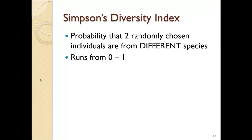But if you have low diversity, the probability that two randomly chosen individuals are from different species is going to be much lower. The chances are, if you grab two individuals at random, they'll be in the same species if you have low diversity. This means that Simpson's does what we want it to do: if it's higher, you have more diversity; if it's lower, you have less diversity.